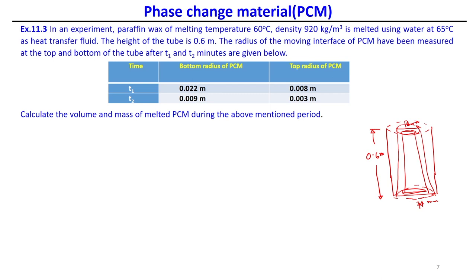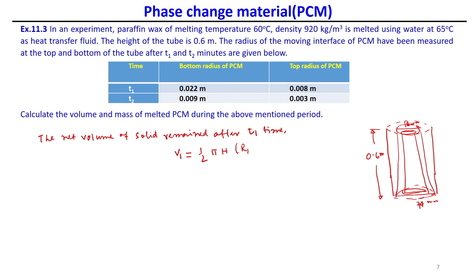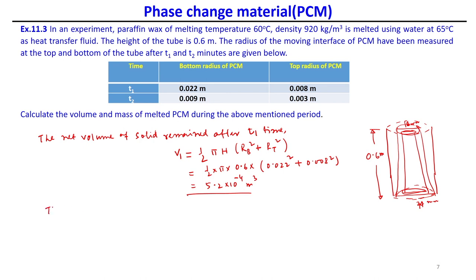To find the net volume of solid PCM remaining after time T1, we use the average volume formula: V1 = ½ × π × h × (Rb² + Rt²) = ½ × π × 0.6 × (0.022² + 0.008²) ≈ 5.2 × 10⁻⁴ m³.